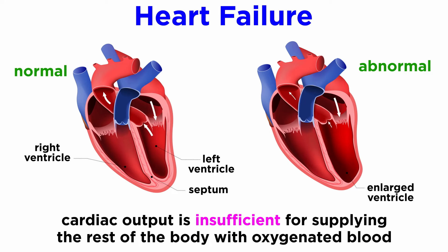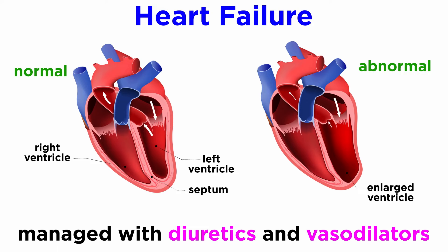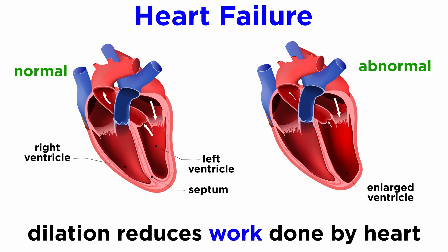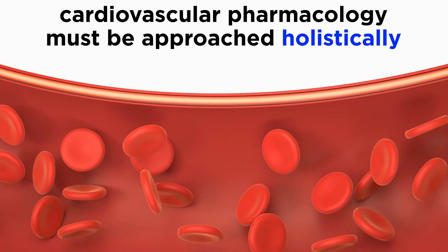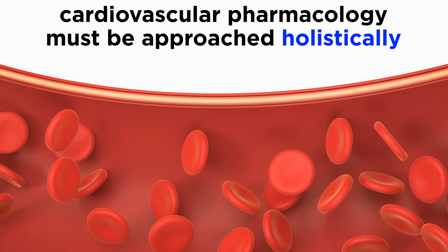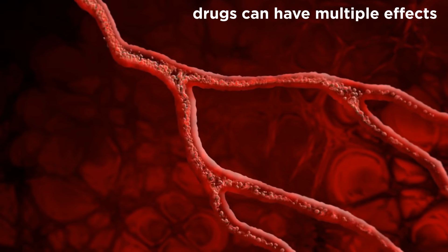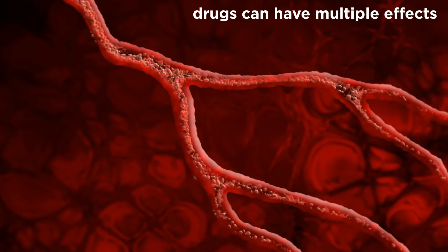Heart failure is characterized by the cardiac output of the heart being insufficient to supply the rest of the body with its demands of oxygenated blood — in other words, there is a gap between cardiac output and the demands of the rest of the body. Chronic heart failure is often managed with diuretics and vasodilators to reduce blood pressure, and as a consequence of the Frank-Starling law, reduces cardiac preload to reduce the work done by the heart. Cardiovascular pharmacology must be understood holistically, considering the various mechanisms of different drug actions that are often used in tandem.